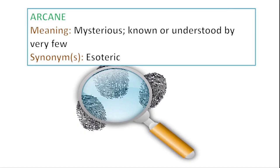Next one is arcane — I love this word. The synonym we have for this is esoteric. Something arcane is understood or known only by very few. For instance, almost everyone knows about the basics of cricket, but only very few people would have an arcane knowledge of its history that makes them a true fan. So arcane is mysterious or known only by very few people, and the synonym is esoteric.